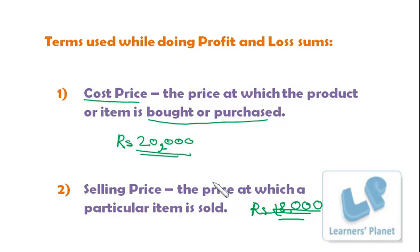Because after buying it, he sold it because he had used it or maybe it got damaged or whatever be the reason. So, the Cost Price is the price at which he bought and the selling price is the price at which he sold. Now, children, the difference over here. If we subtract 18,000 from 20,000, we will get 2,000.